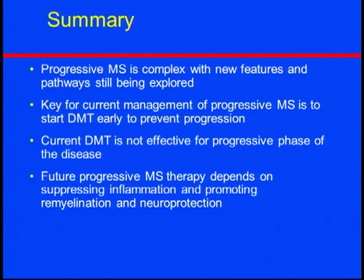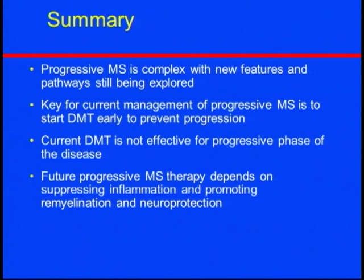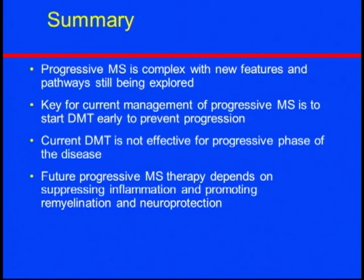To summarize: progressive MS is very complex, with many new features and pathways yet to be discovered. Current treatment focuses on preventing progression by treating patients early with disease-modifying treatment. But future treatment — which we are now exploring through the EXPAND clinical trial — is to explore the efficacy and safety of siponimod in progression, which will also allow us to better understand the disease. Thank you for your attention.